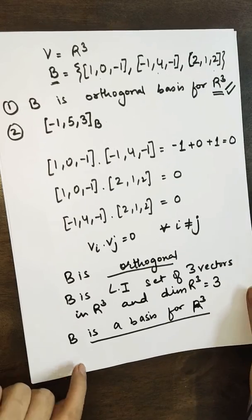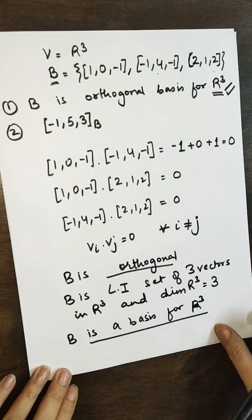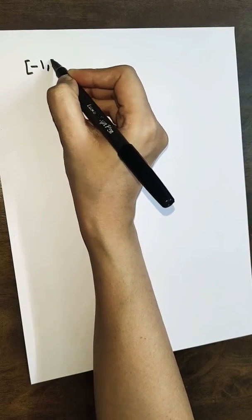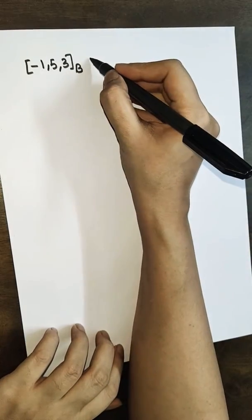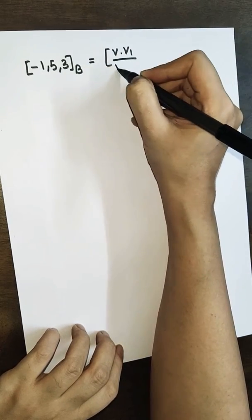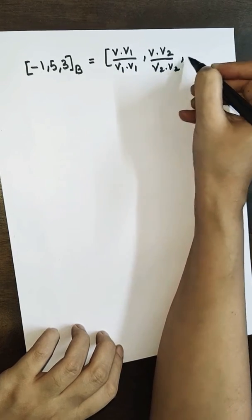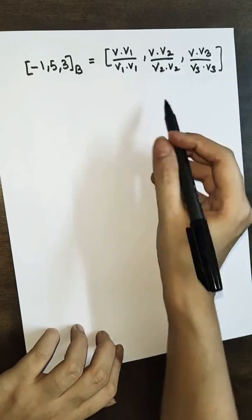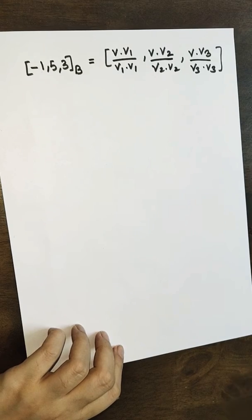Let us move forward to find the coordinates of (-1, 5, 3) with respect to this ordered basis. We will use the formula: coordinates are (v·v1)/(v1·v1), (v·v2)/(v2·v2), (v·v3)/(v3·v3), where v = (-1, 5, 3). So I need to compute each of these dot products.